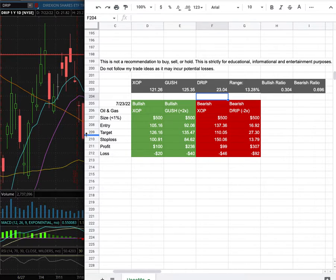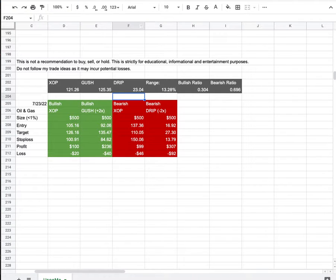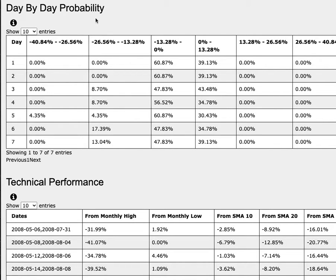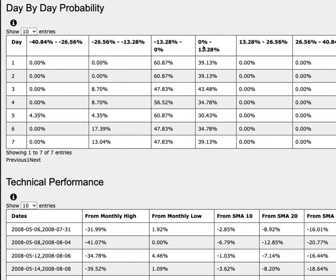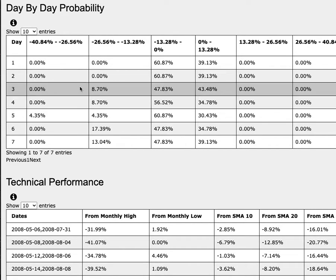So how did I develop these trade ideas? It all comes from the day by day probability model, and we are examining XLP. GUSH is the leveraged version of XLP, while DRIP is the inverse leveraged version of XLP. As we progress to the 5th day or week of trading, XLP has a 30% chance to climb between 0–13%. To the downside, it has a 61% chance to fall between 0–13%, and a 4% chance to fall between 0–27% to 0–41%.